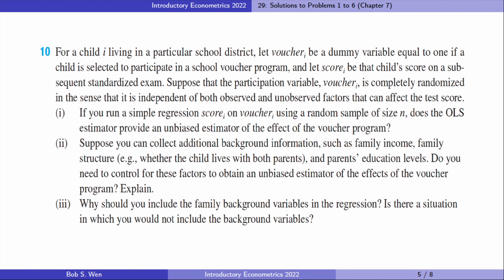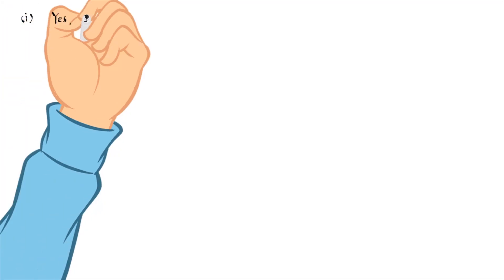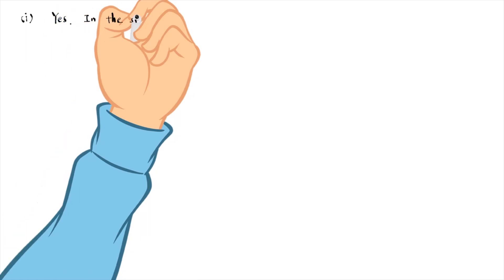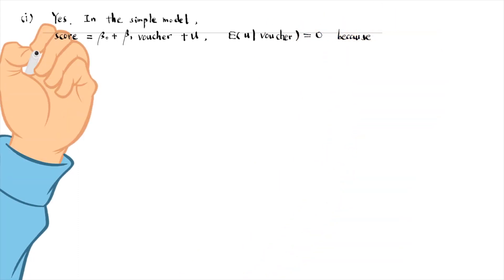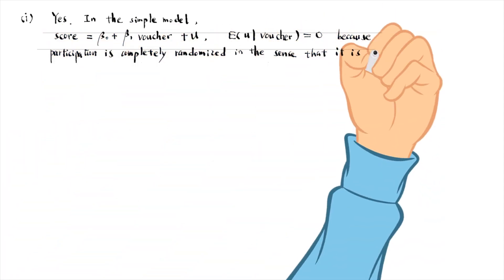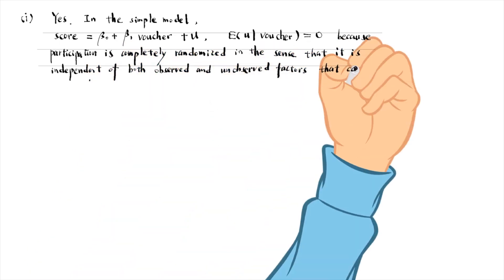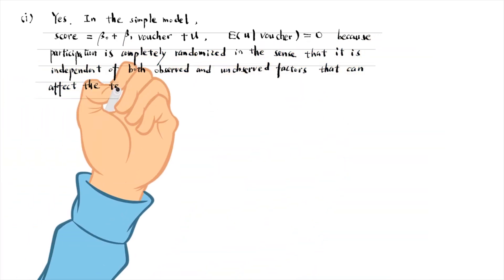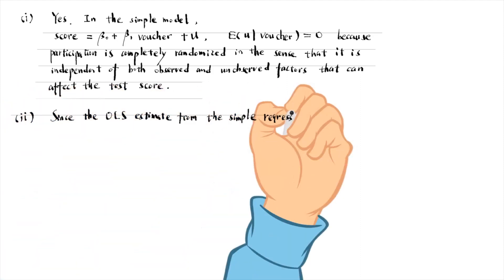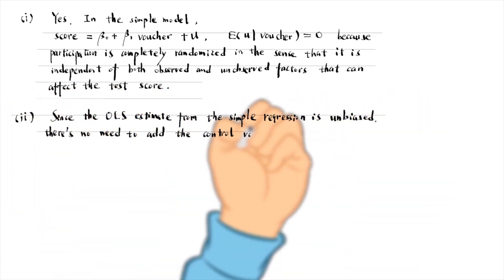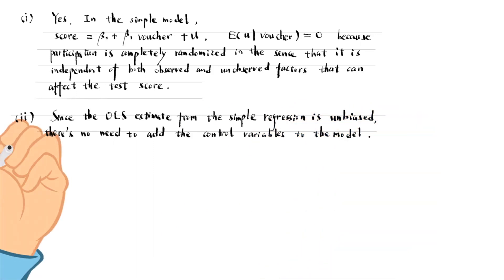Let's do problem 10. The answer to the first question is yes. In the simple regression, the zero conditional mean assumption is satisfied because participation is completely randomised in the sense that it is independent of both observed and unobserved factors that can affect the test score. So the OLS estimate beta 1 hat is unbiased for the program effect on the score. Since the OLS estimate from the simple regression is unbiased, there's no need to add the control variables.